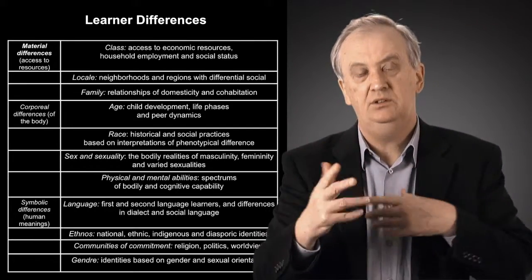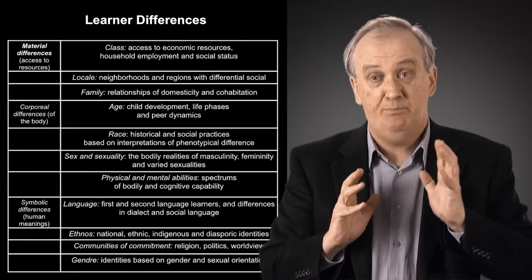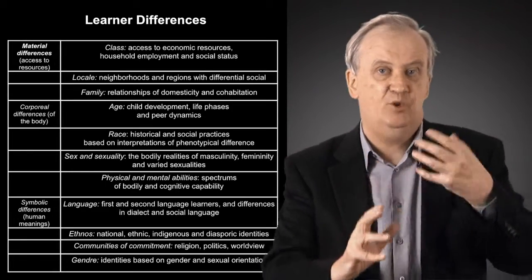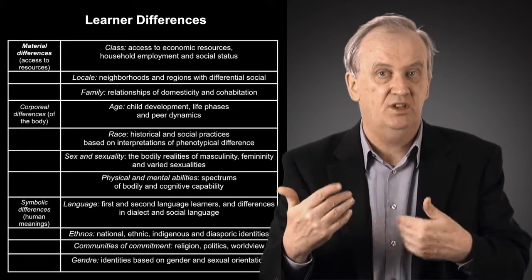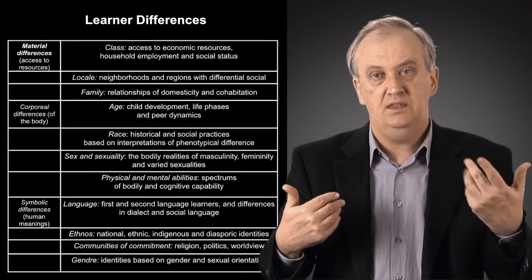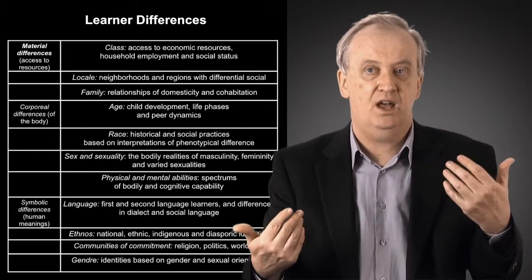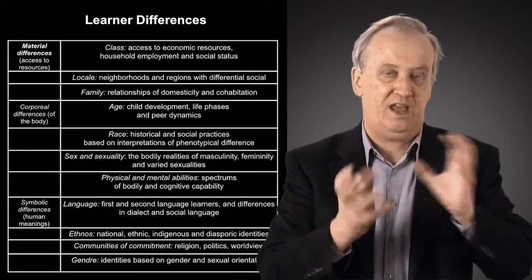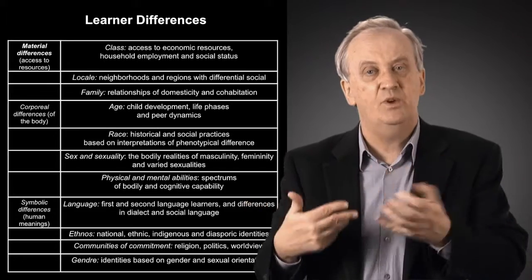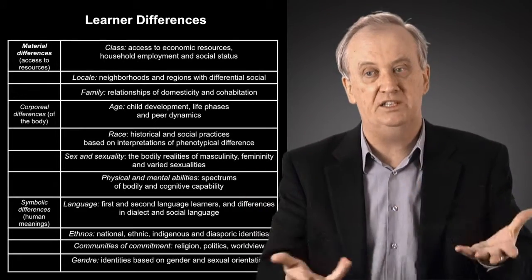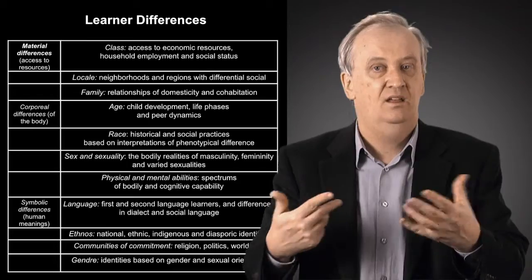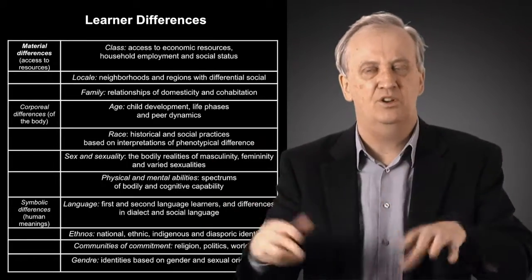What I want to do now is build a typology of learner differences, and I'm going to illustrate the way in which that typology is relevant in the case of literacy learning. In this schema, we have three macro categories of learner differences: material differences, corporeal differences — bodily differences — and symbolic differences, which are about human meanings, culture, language, and all that kind of stuff.